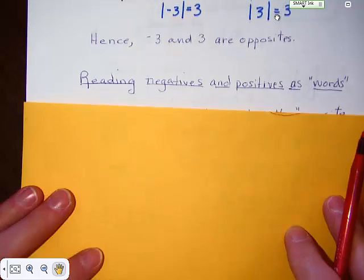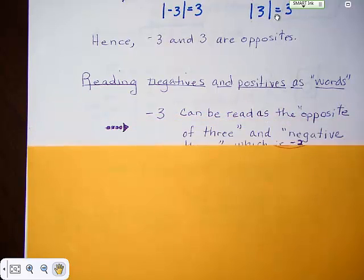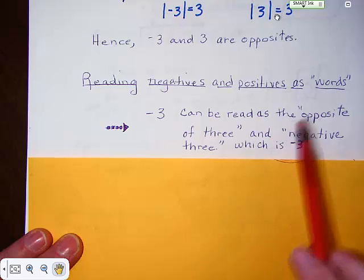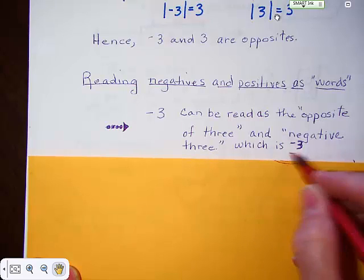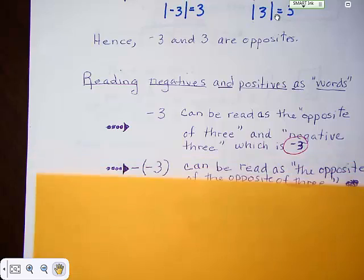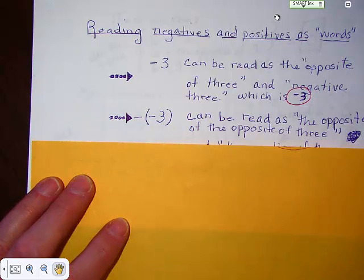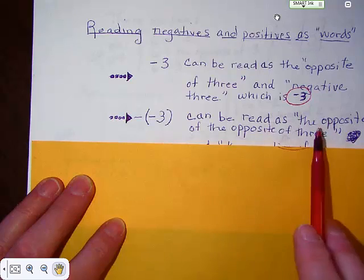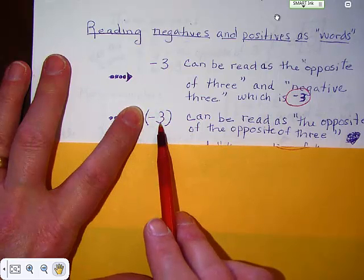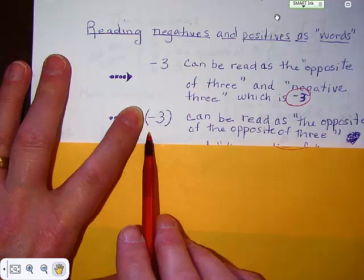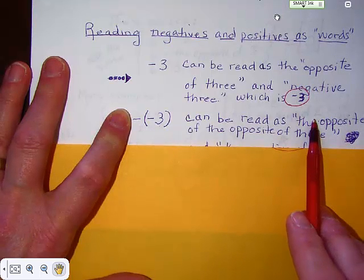We are sometimes asked to read negatives and positives as words. Negative 3 can be read as 'the opposite of 3.' Now, what if we have the negative of the negative of 3 — the opposite of the opposite of 3? If we're at negative 3, we're on the left side of 0. If we flip it and go the opposite of the opposite of 3, we go to the right side of 0 and it becomes 3.